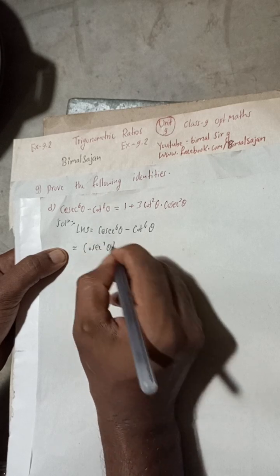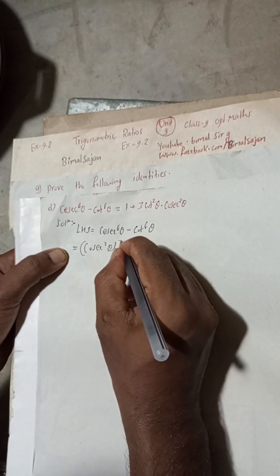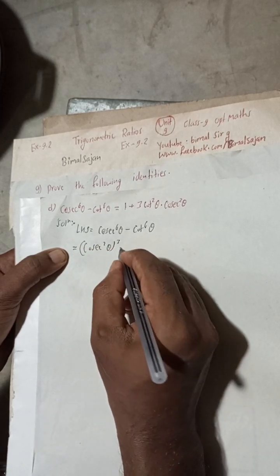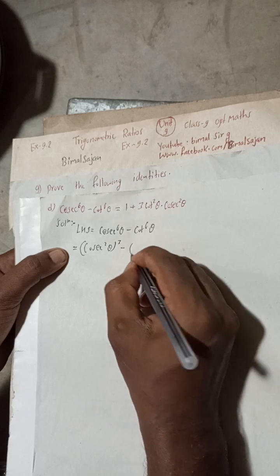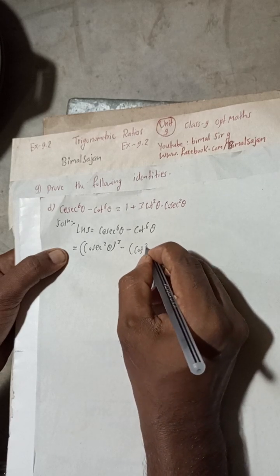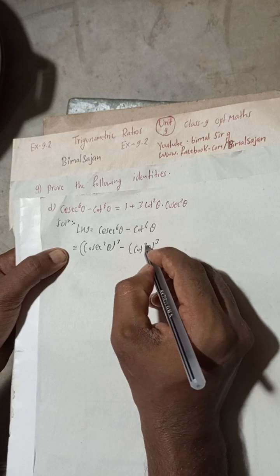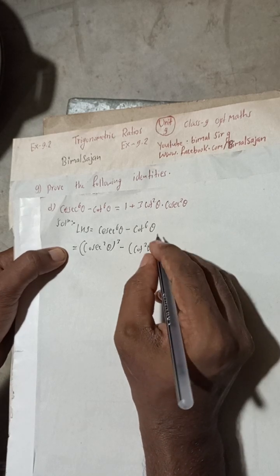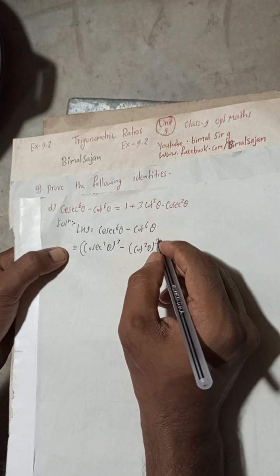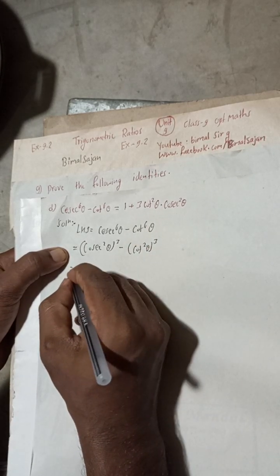Now I can write cosec²θ whole cube, so cosec to the power 6 we get. Again, cot²θ whole cube, so cot to the power 6 we get. So this gives us cosec⁶θ minus cot⁶θ.